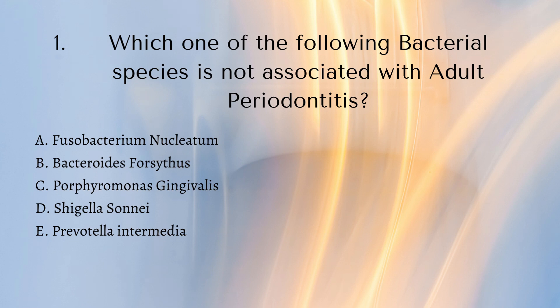This question is: which one of the following bacterial species is not associated with adult periodontitis? This is quite a common question that comes up a lot, particularly on the part one exam. You're not expected to know what all of these bacteria do and how they work, but it is useful to know some of the names of the bacteria involved with perio. Particularly one that comes up a lot is AA, which is the bacteria involved in aggressive periodontitis — that's a really important one to know. The correct answer here is D.